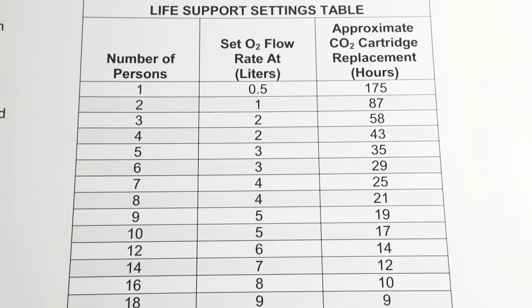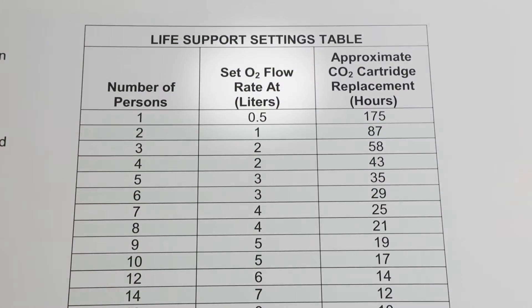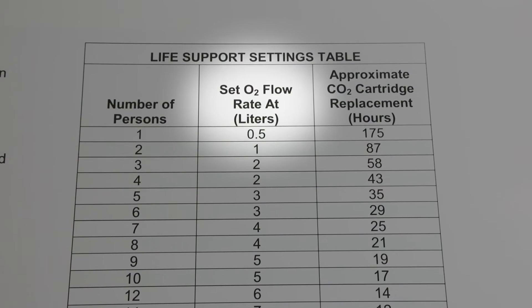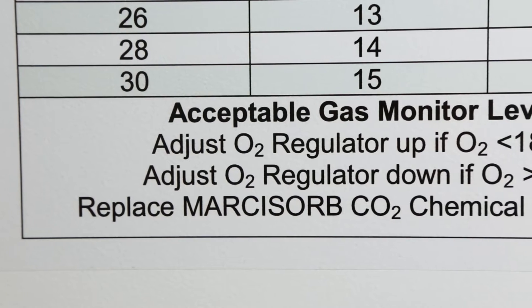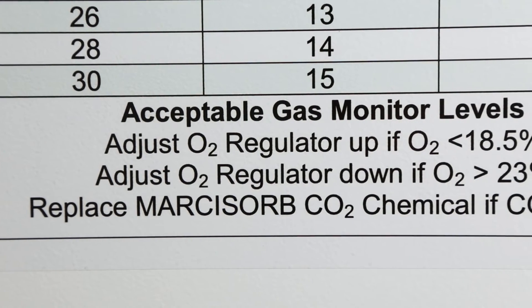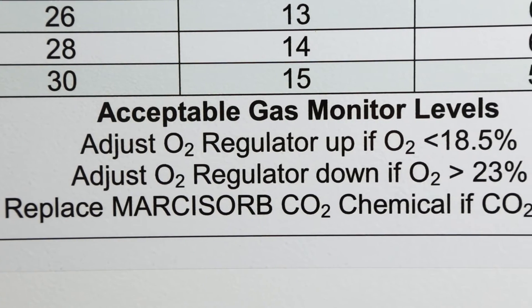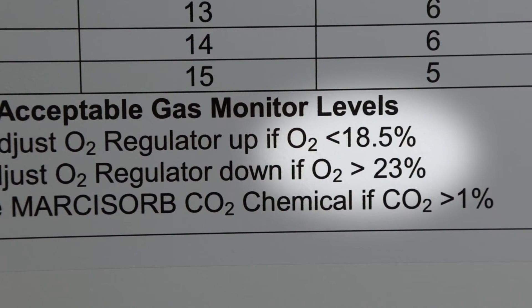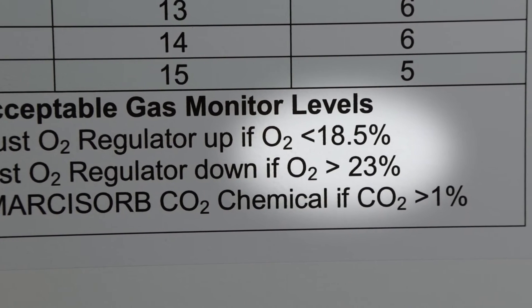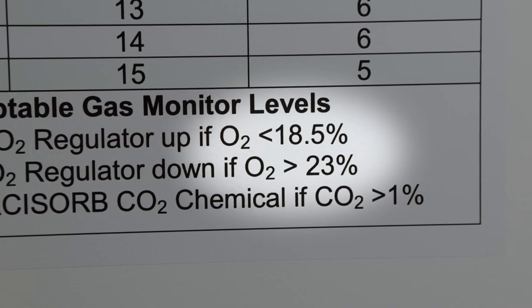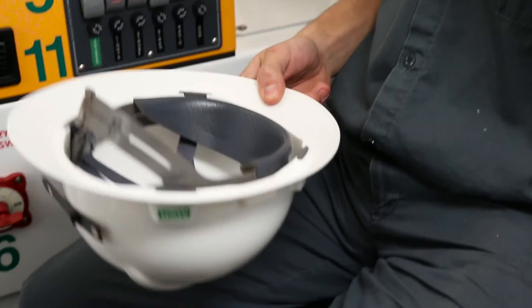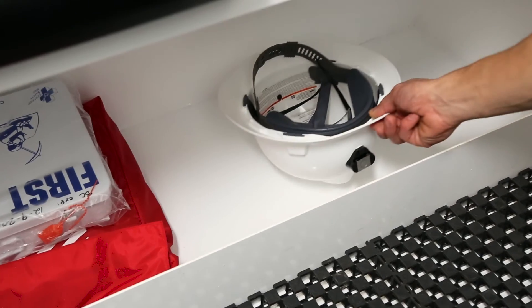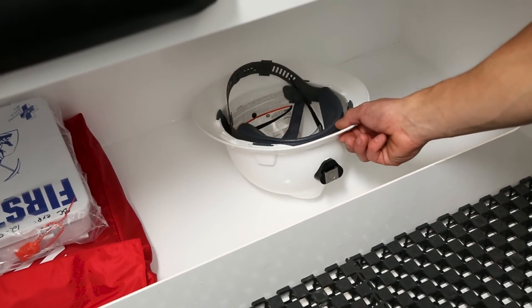For further information on oxygen flow rates, refer to the life support settings table located on the safe haven wall. If an automated oxygen delivery system is installed, the oxygen concentration will automatically be maintained between 18.5% and 23%.